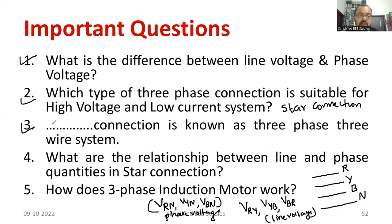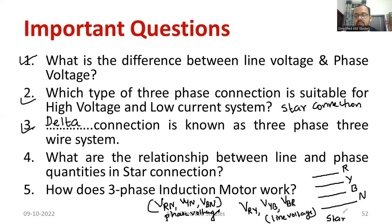Third question: Which connection is known as three-phase three-wire system? The right answer is delta. In case of star connection, it is known as three-phase four-wire system. Kindly note this.